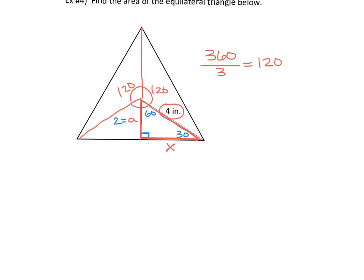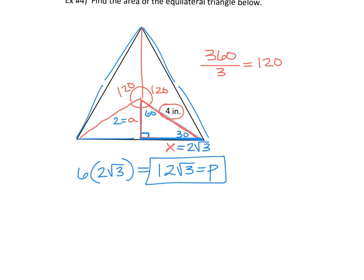So we have our apothem. Now we need to find our perimeter. Do you see how you can find your perimeter? What is this length, the X? Yes, that is two rad three. So you have to ask yourself, how many of those are there to make up my perimeter? There would be two to make up the side of the figure. How about the whole perimeter? There's six total. So you can do it that way. You can double it and then multiply by three, or you can just multiply by six right off the bat because there's one, two, three, four, five, six of those. So I'm going to take that two rad three and multiply it by six and I get 12 rad three for my perimeter.